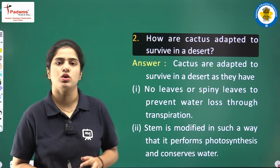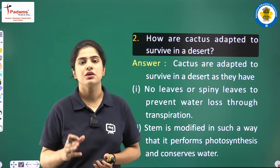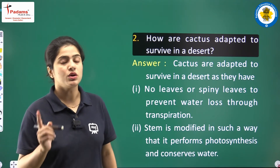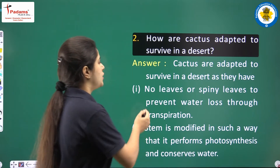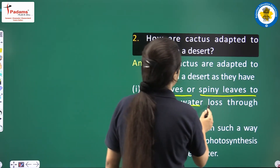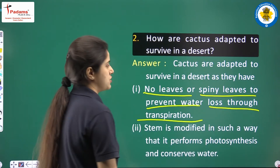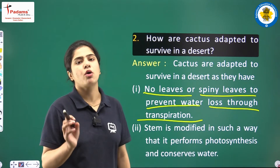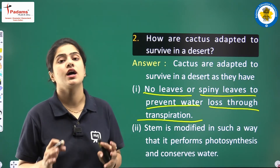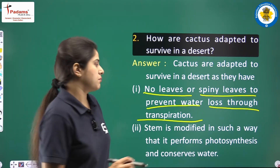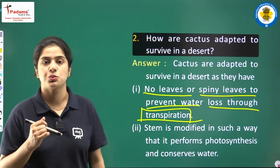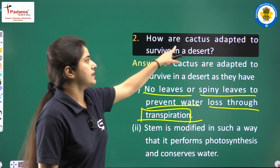In that polythene bag there were very low water droplets as compared to the second plant. So the first property is: no leaves or spiny leaves to prevent water loss through transpiration. The water loss is very low in cactus leaves because of the process of transpiration.